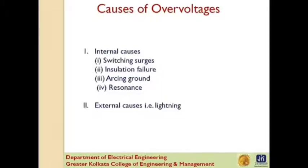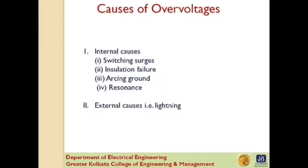However, surges due to lightning are very severe and may increase the system voltage to several times the normal value. If the equipment in the power system is not protected against lightning surges, these surges may cause considerable damage. In fact, protective devices provided against overvoltages mainly take care of lightning surges. Internal causes of overvoltage are primarily due to oscillations set up by sudden changes in circuit conditions, such as a switching operation or a fault condition like grounding of a line conductor. In practice, the normal system insulation is suitably designed to withstand such surges.